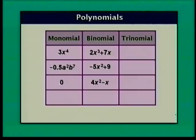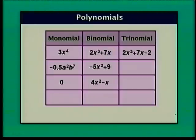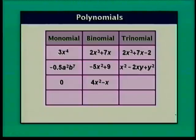4x squared minus x is also a binomial. 2x cubed plus 7x minus 2 is a trinomial with three terms: 2x cubed, 7x, and negative 2. x squared minus 2xy plus y squared is a trinomial in two variables x and y. x squared plus x minus 6 is also a trinomial.